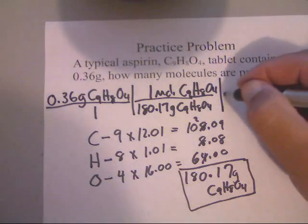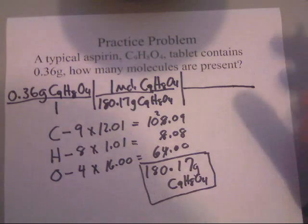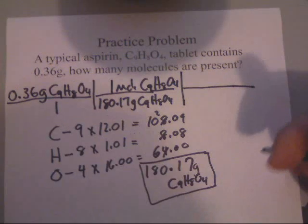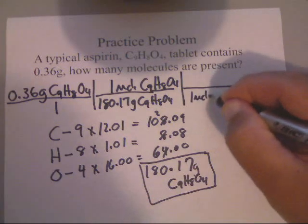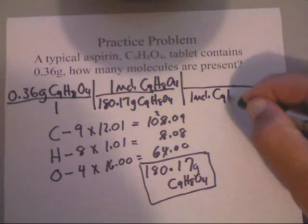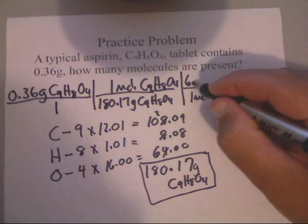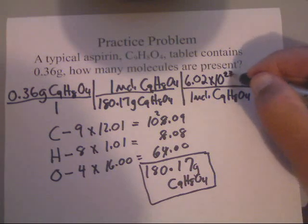That's 180.17 grams of C9H8O4. Now, up above here, I'm going to write 1 mole of aspirin because I did the molar mass. I always do it this way. I do it three steps. I'm stubborn. Just because I know it, you need to be able to understand the differences. Down here would be 1 mole of C9H8O4.